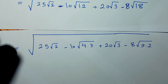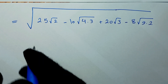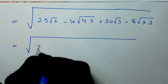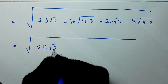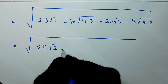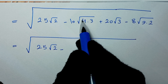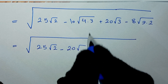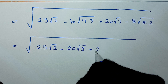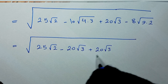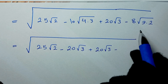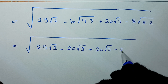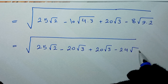So in the next step: 25 square root of 2, minus square root of 4 is 2, so 2 times 10 is 20 square root of 3, plus 20 square root of 3, minus square root of 9 is 3, so 8 times 3 is 24 square root of 2.